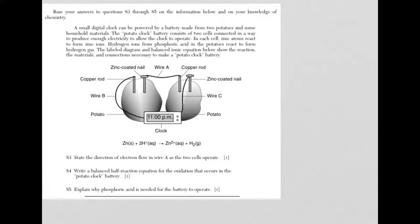You're looking at questions 83 through 85 of the New York State Chemistry Regents Exam, June 2015. There's information here and this picture of what's called a potato clock. You need to go ahead and process this information along with the picture, and then answer the questions as best you can, and then come back, and we'll take a look at it together.